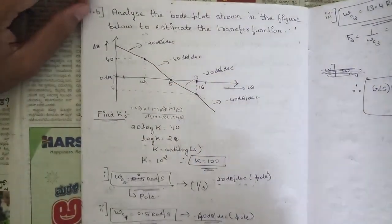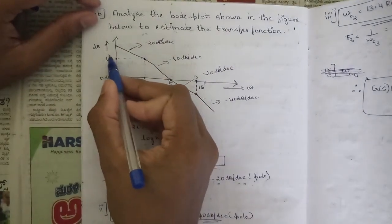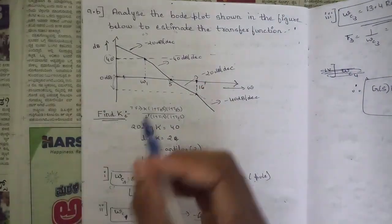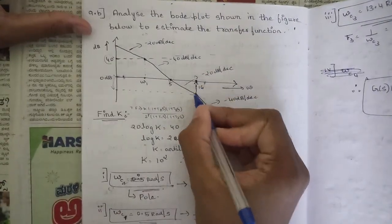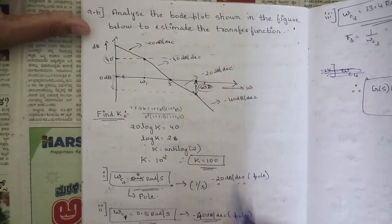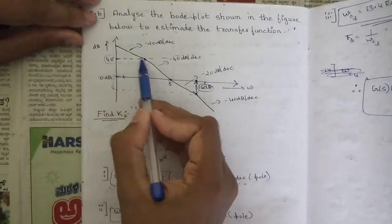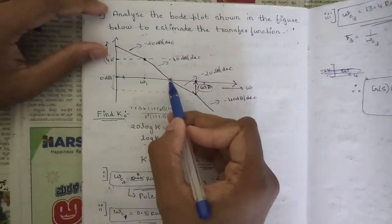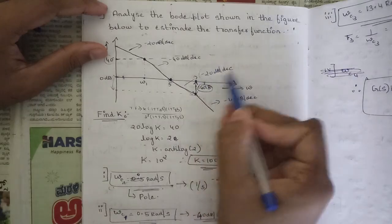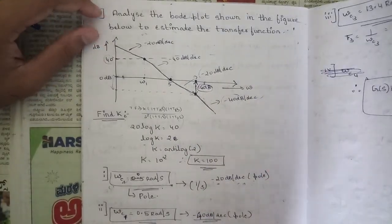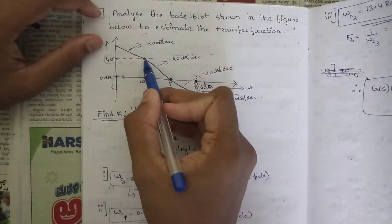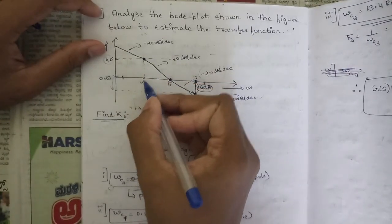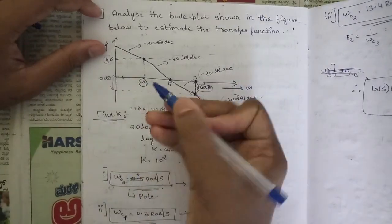This is the Bode plot I have drawn. They have given a 40 dB reference line, a 0 dB line, and a gain margin of 16 dB. They have also given a 20 dB line. From one point the slope changes to minus 40 dB per decade, then to minus 20 dB per decade, then back to minus 40 dB per decade. From corner frequencies only, the slopes get changed — so wherever a change in slope is observed, we drop a line to get the corner frequencies.